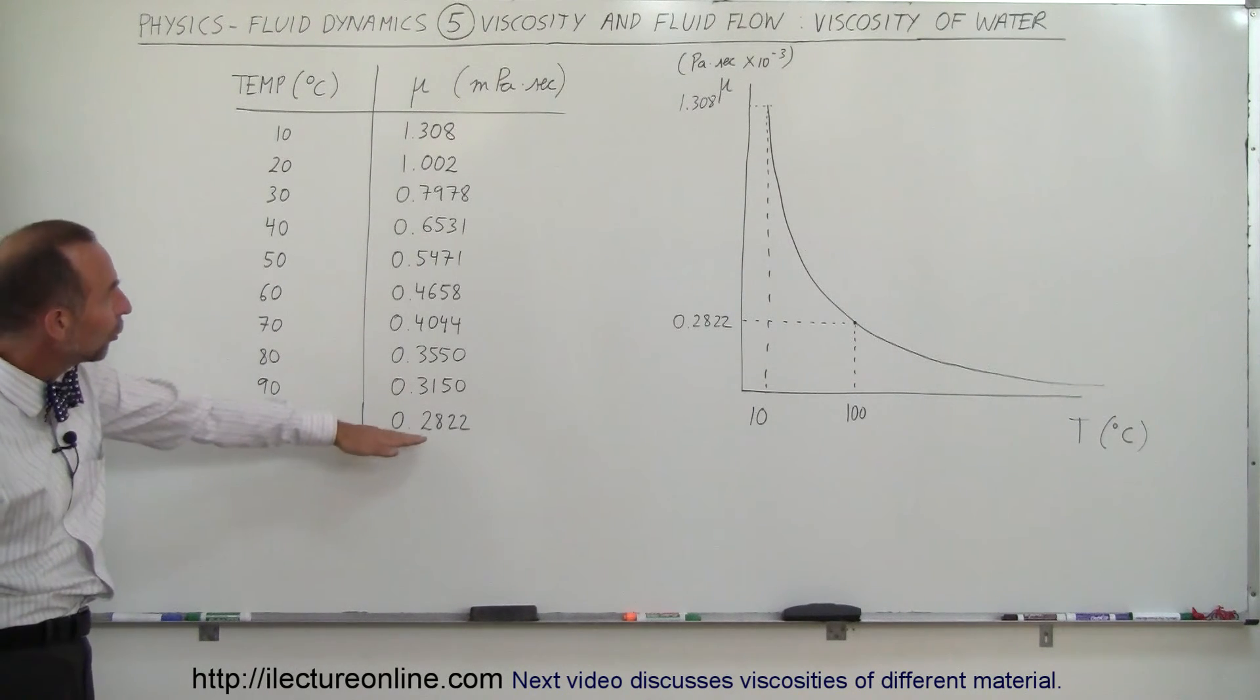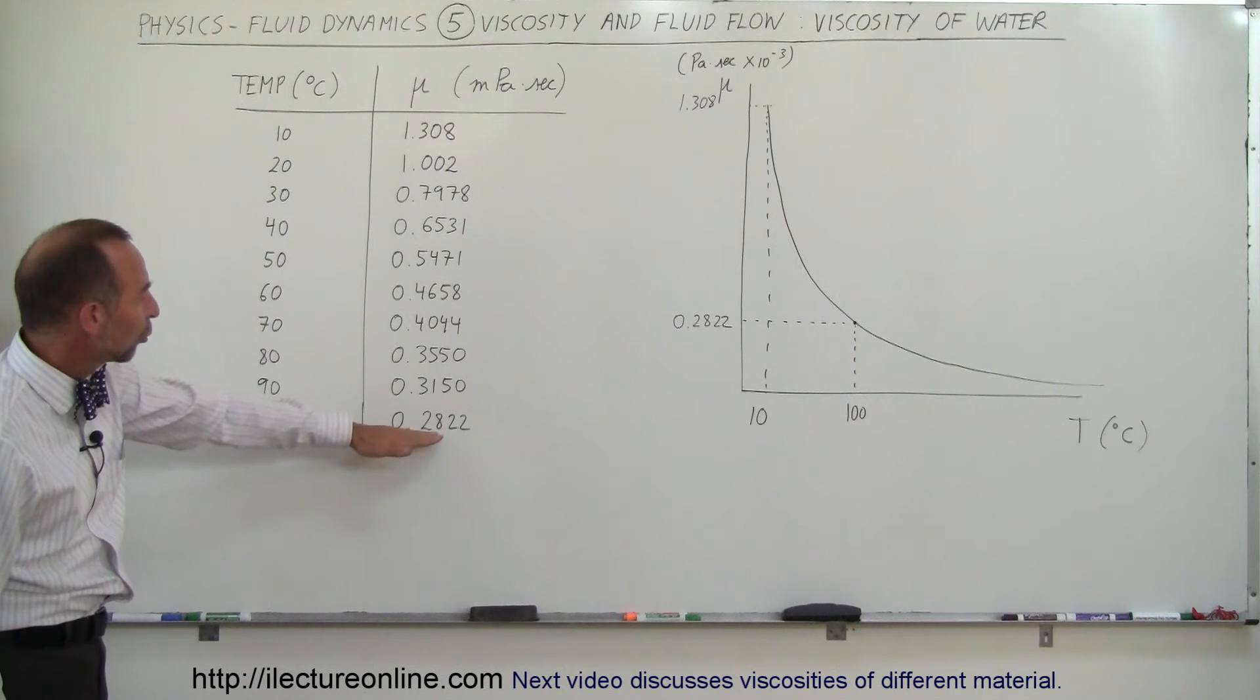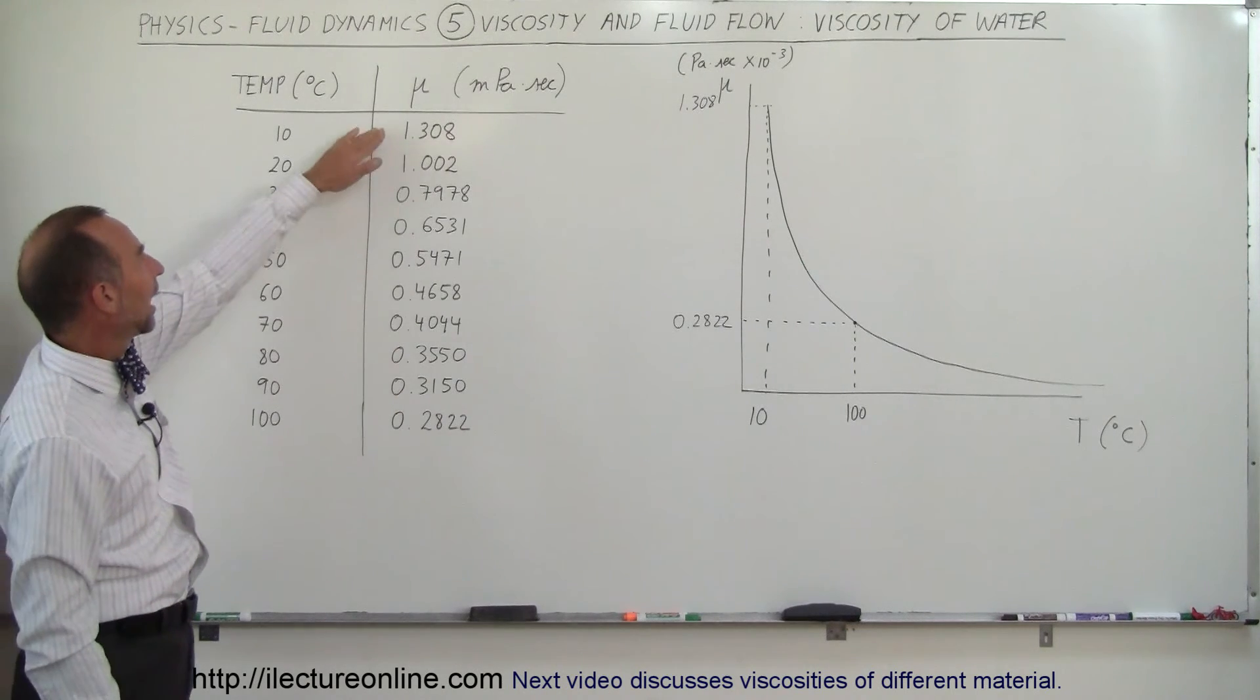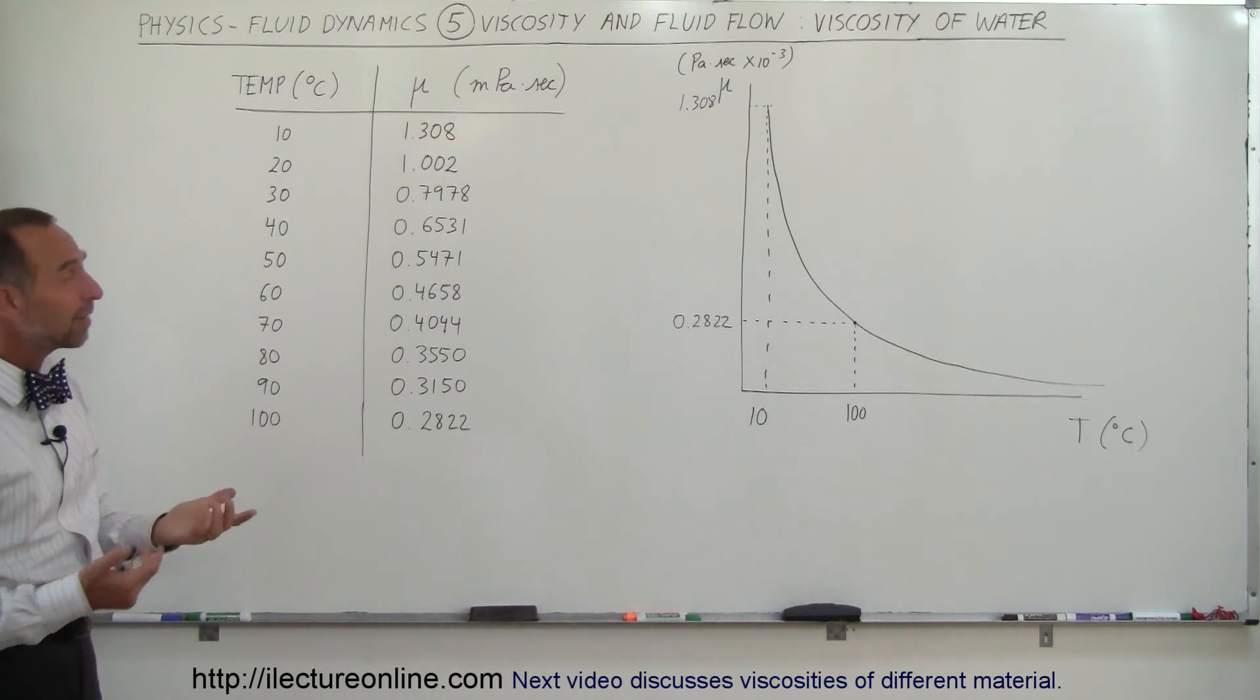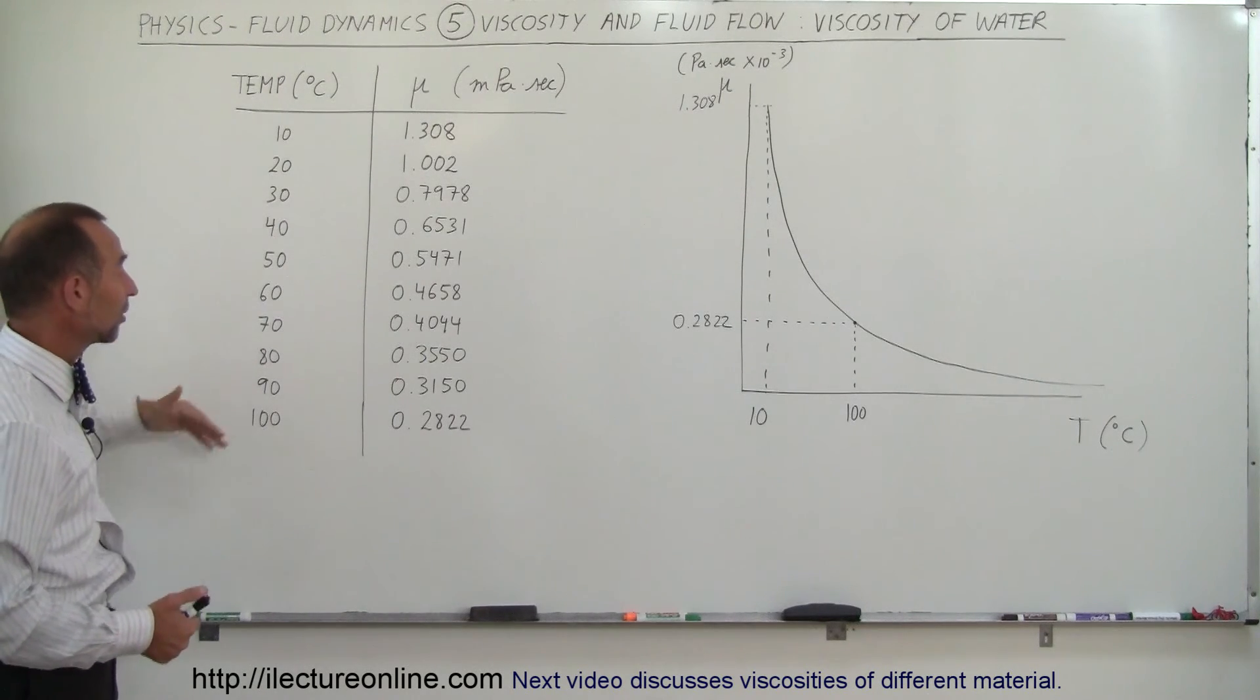Notice that it's roughly about 20 percent of viscosity at 100 degrees versus the temperature when the water is at 10 degrees. It's about a five to one ratio between 10 degrees and 100 degrees. It's quite a bit of difference.